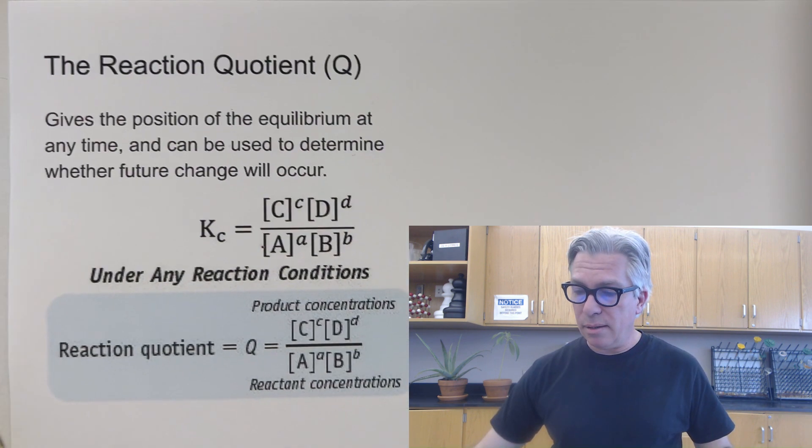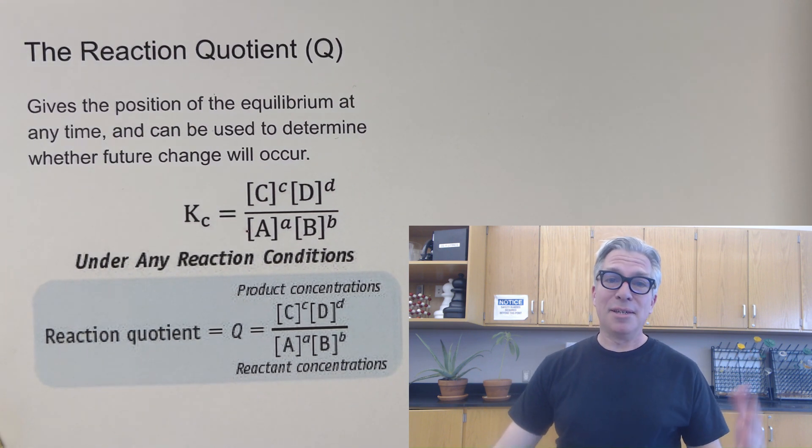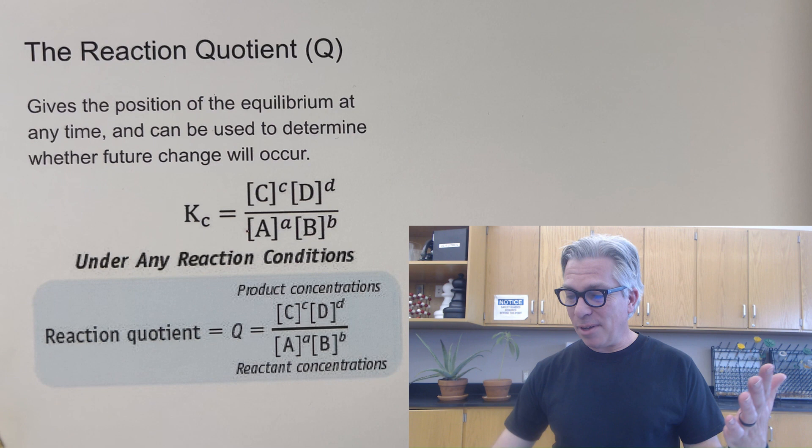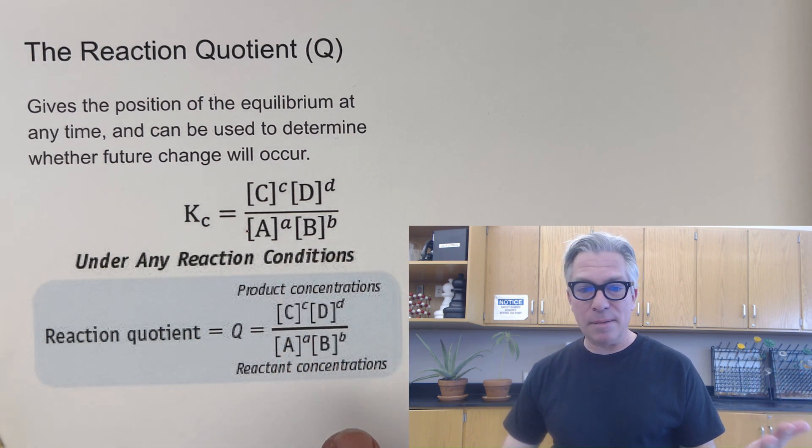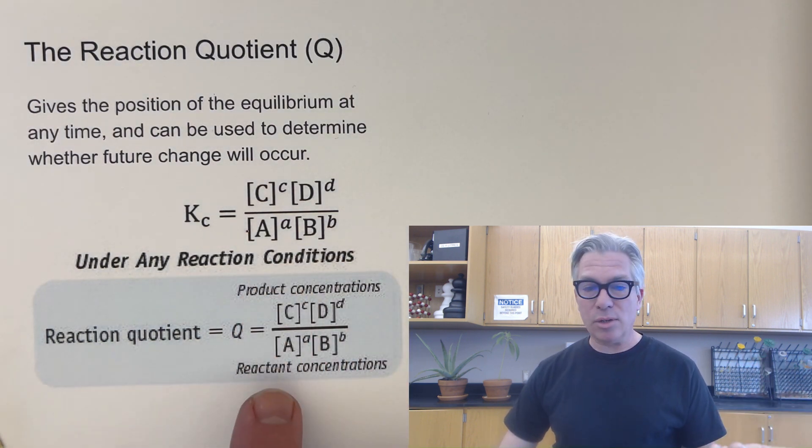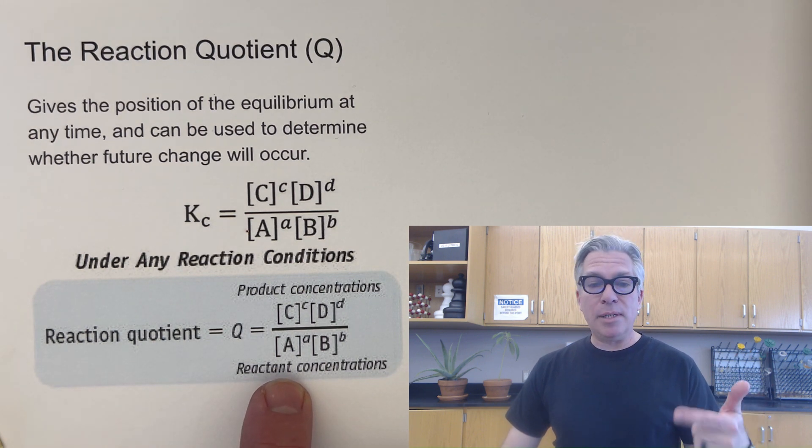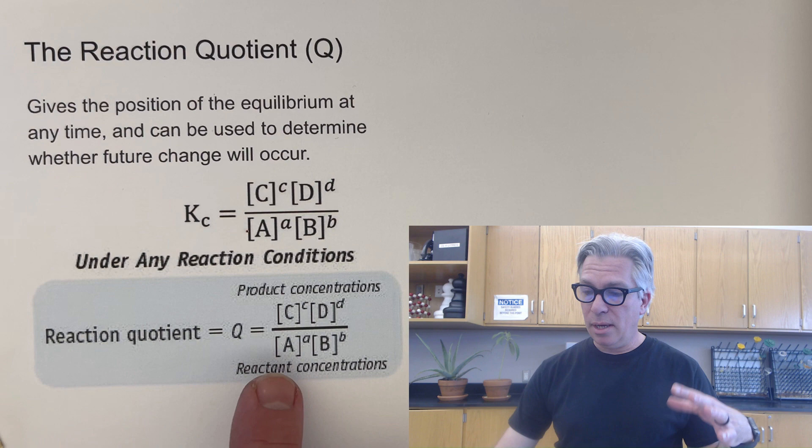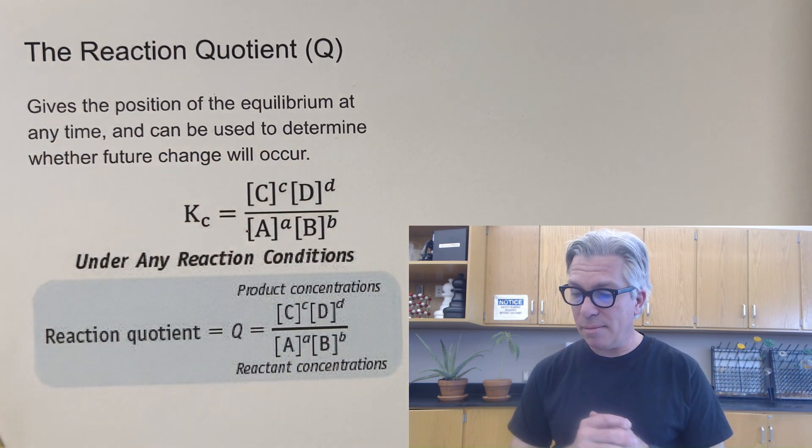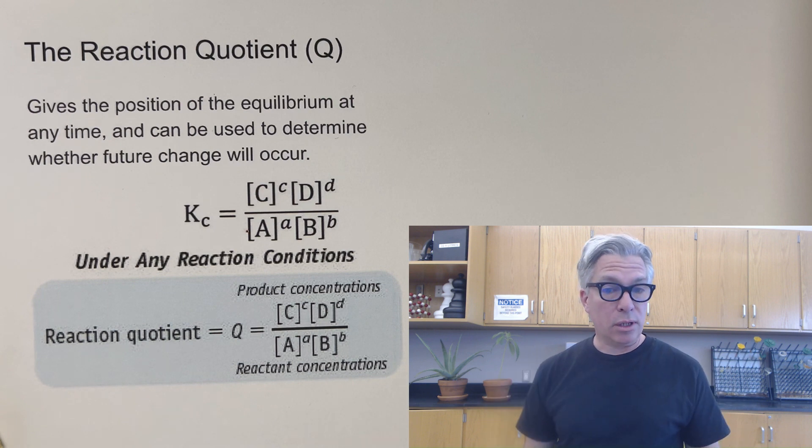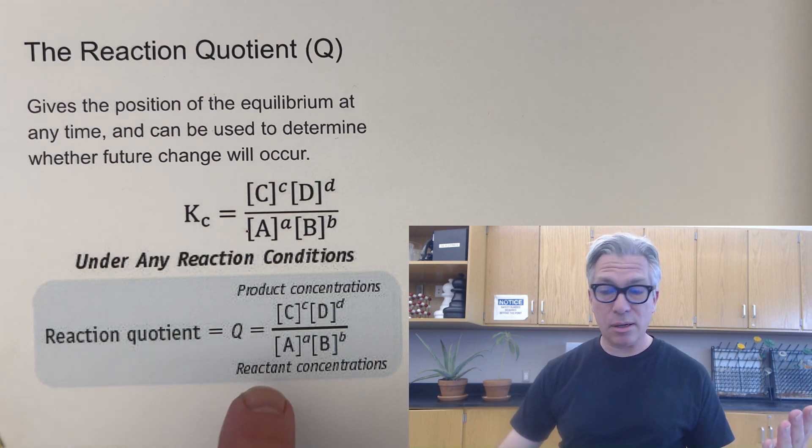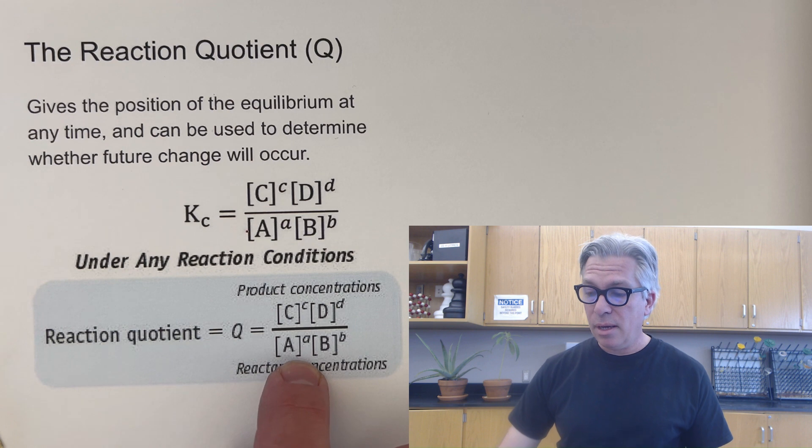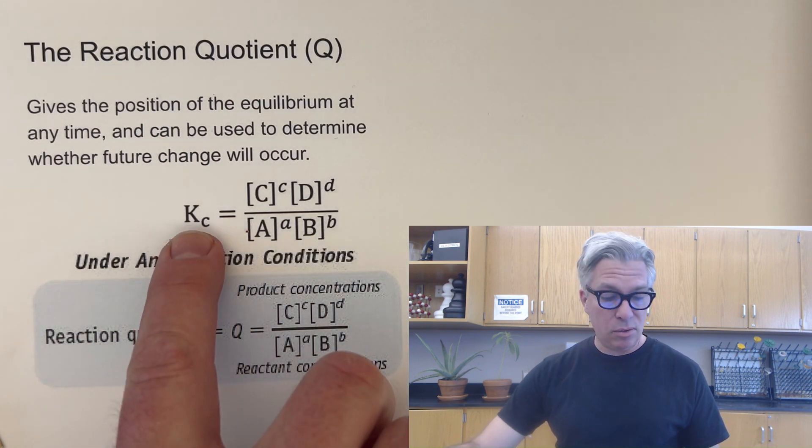So check it out. The reaction quotient. We thankfully use the letter Q for reaction quotient. So nothing confusing there. But what it is, and you'll notice a very big similarity between the equilibrium constant expression and the Q expression. It's the same, but what we're going to be doing is we're going to get the position of the equilibrium at this moment by plugging in what we know at this moment. So it can be used to give the position of the equilibrium at any time and can be used to determine whether future change will occur. So what we do is we are just going to plug our numbers in that we have, and then compare Q to what we know K to be.